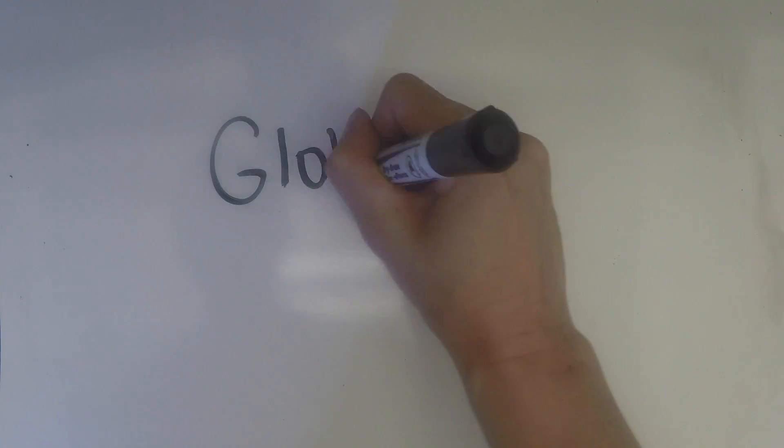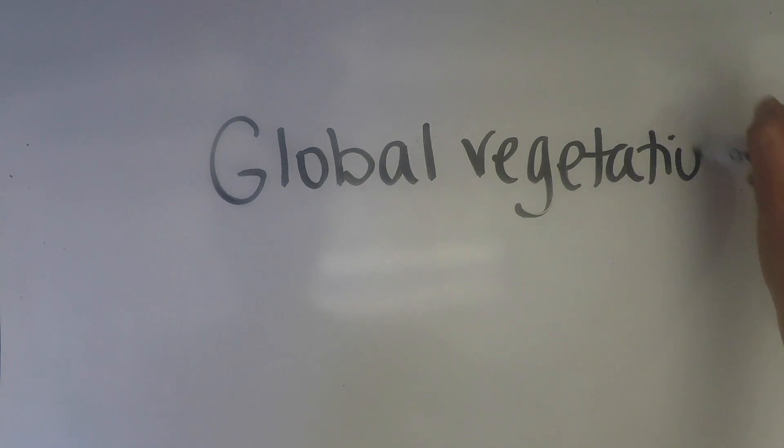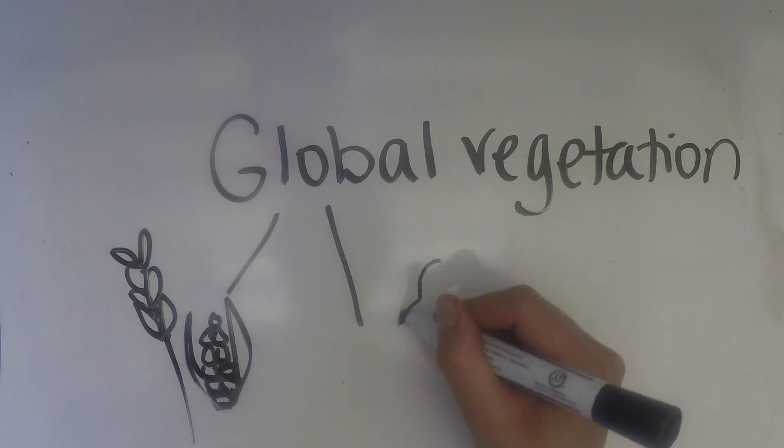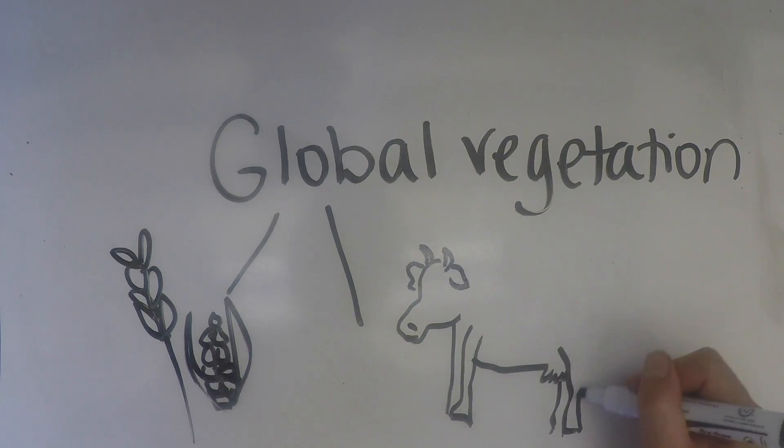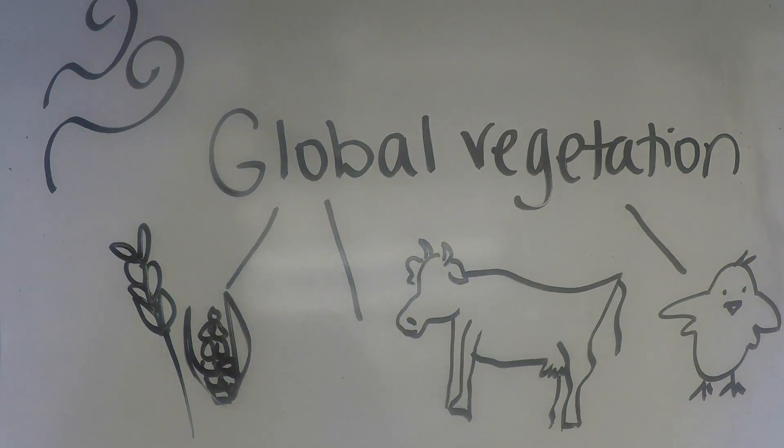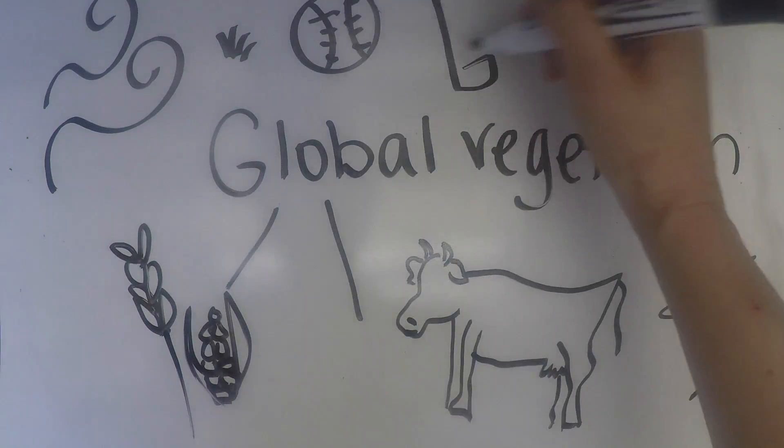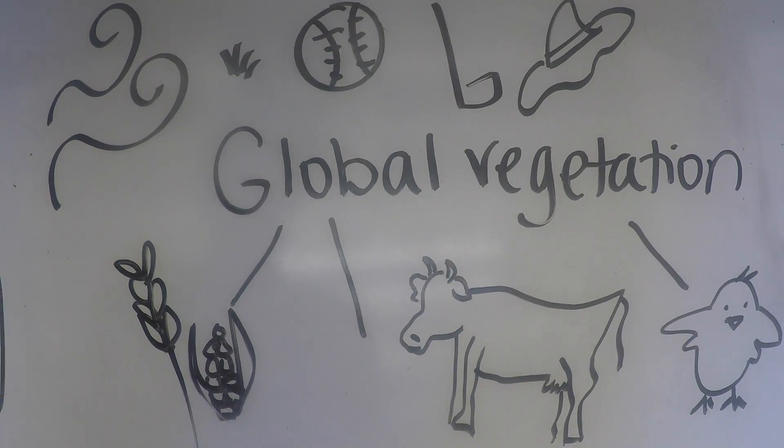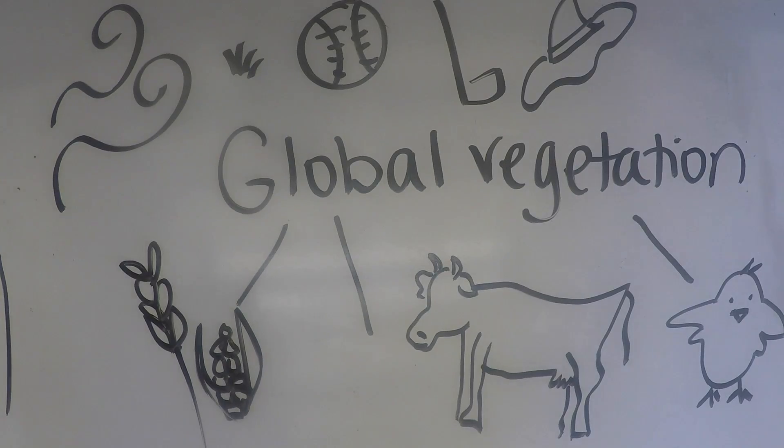Poaceae is an important component of our global vegetation. Grasses such as wheat, corn, and rice serve as food for humans and livestock. They also provide habitat to wildlife like birds. Other grasses serve to prevent wind and water erosion, while others make up our backyards, recreational surfaces, and clothing.